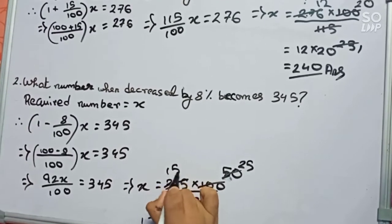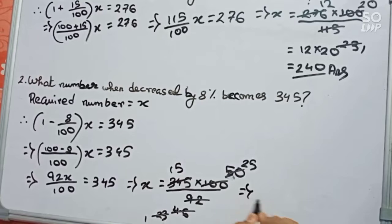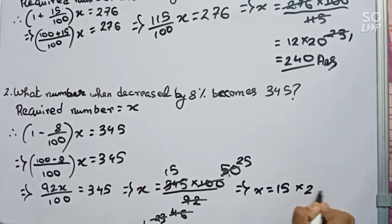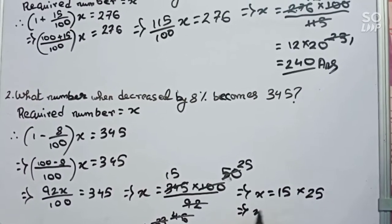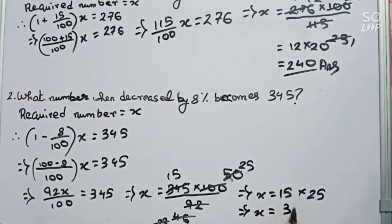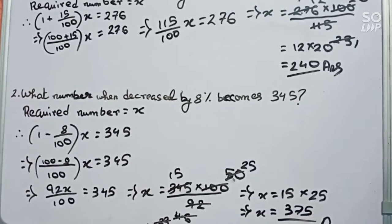It will become 115, so x equals to 15 into 25. Therefore x equals to 375. So this is our answer for our second question.